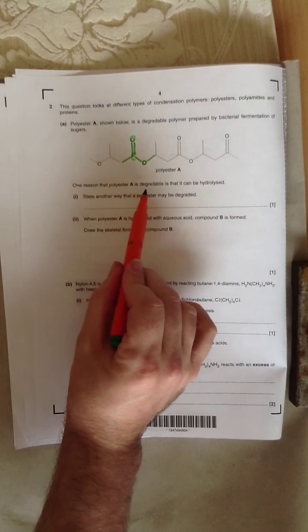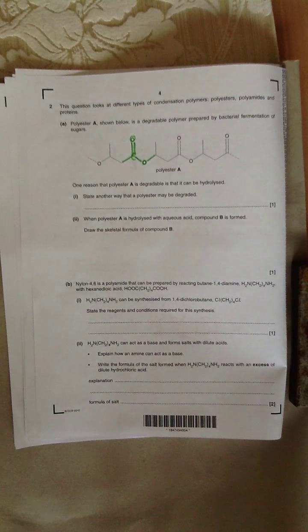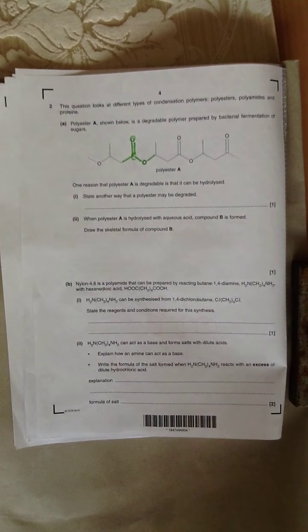This is one reason that polyester A is biodegradable. It can be hydrolyzed. It states another way that a polymer may be degraded. And the classic way to do this is via UV light or sunlight. And you know this, because if you leave a carry bag out in your garden for a long time, the carry bag falls apart.